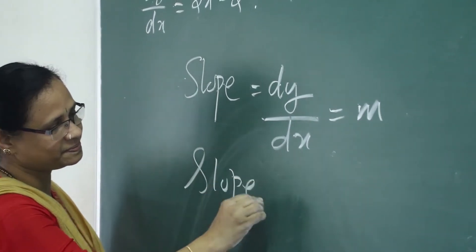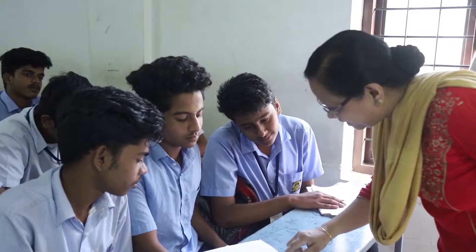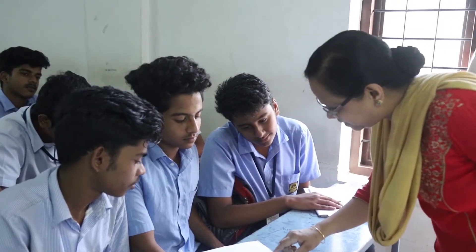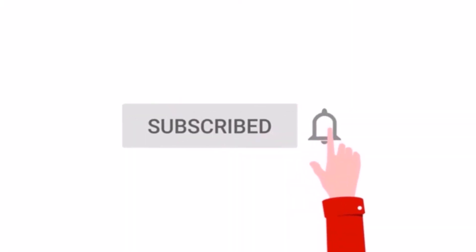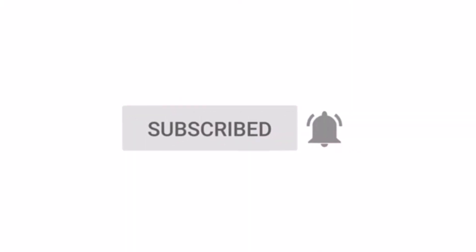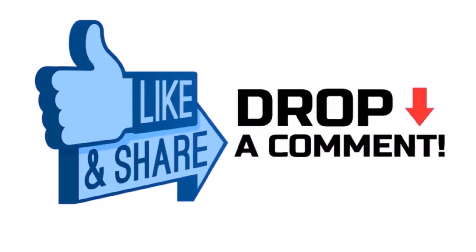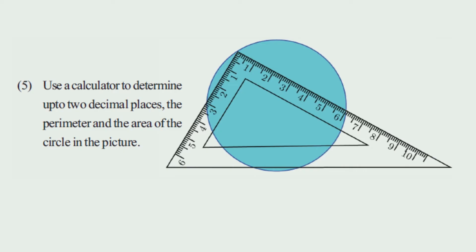Mathematics is a very easy subject. We don't have to do it manually — use a calculator to determine, up to two decimal places, the perimeter and the area of the circle in the picture.